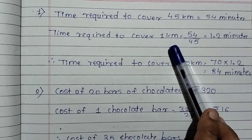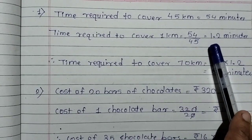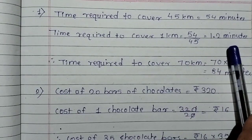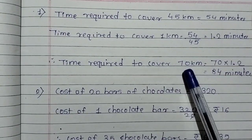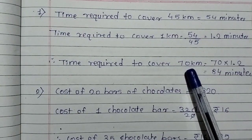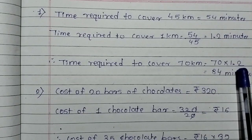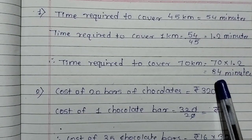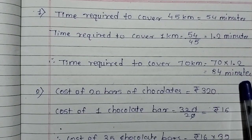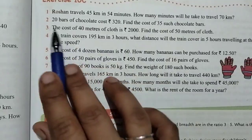Now, to find out how many minutes he will take to travel 70 km, I have multiplied 1.2 by 70, and the answer is 84 minutes. Is it easy?